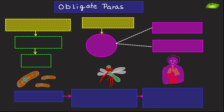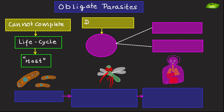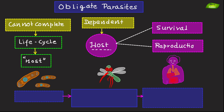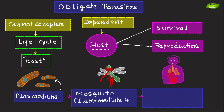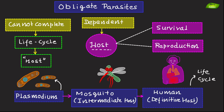Obligate parasites cannot complete their life cycle without spending part of their time in a host; they are entirely dependent on the host for survival and reproduction. An example is Plasmodium species, which requires both a mosquito as an intermediate host and a human as a definitive host to complete its life cycle.